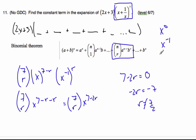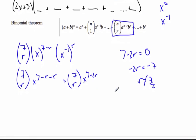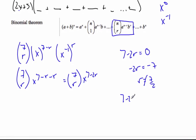Let's try negative 1. So if I go 7 minus 2r equals negative 1, minus 2r is equal to negative 8, r is equal to 4. So when r equals 4, I get an x to the minus 1. So this is r equal to 4.